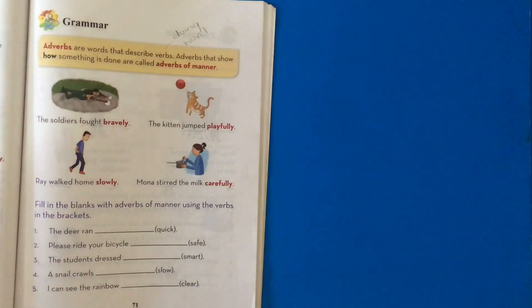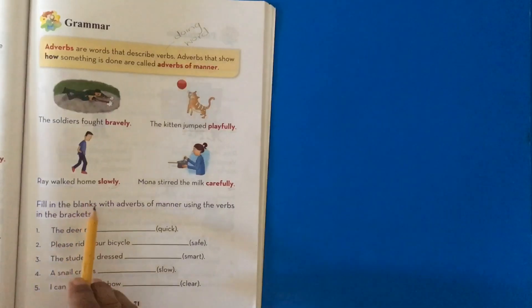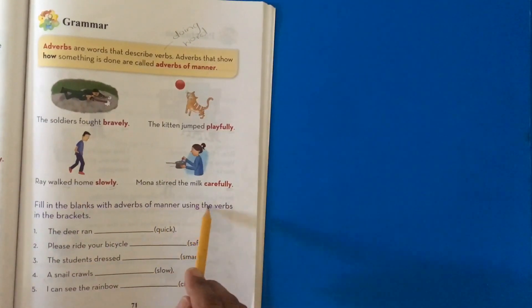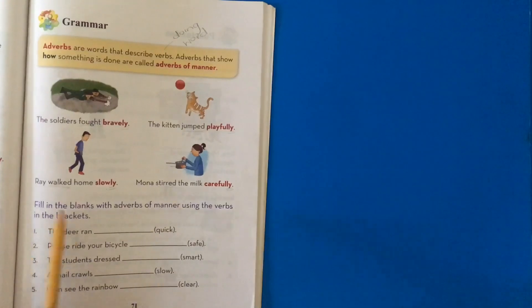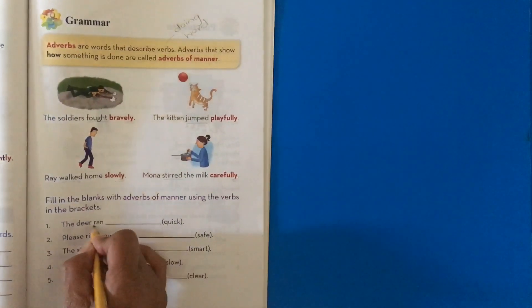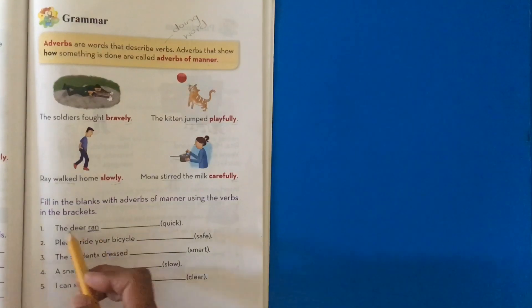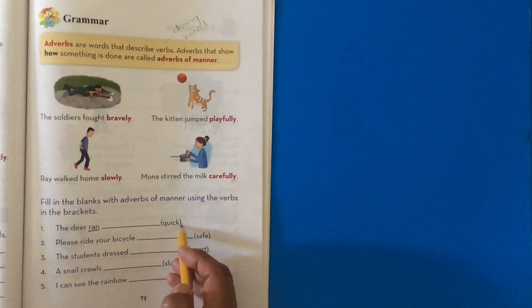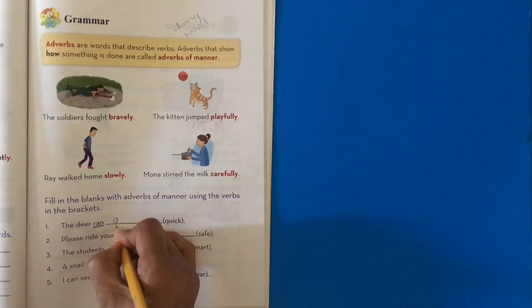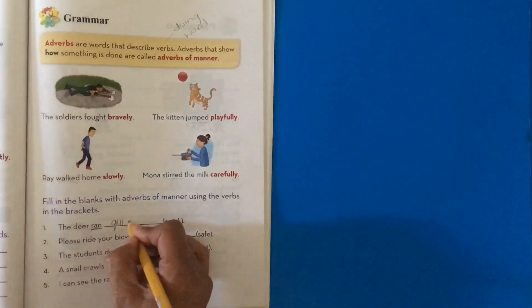Now, let's look at our activity. Fill in the blanks with adverbs of manner using the words in the brackets. Now, remember our formula will be word plus Y. So, the deer ran. Let's underline ran. That's our verb. How did the deer run? The deer ran quickly. So, what do we add to quick? We add L-Y. Because we ask the question, how? Quickly.